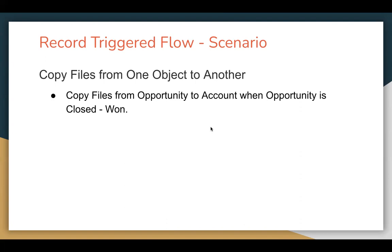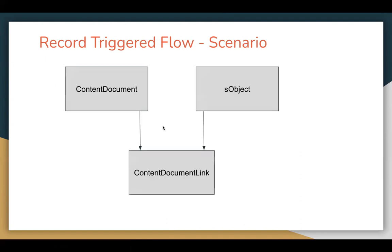First, we need to understand how files are managed in Salesforce. Basically, whenever you attach any file on any object, a ContentDocument object record is created for that file. So the file always stores under the ContentDocument object. Then the S-object — let's say Opportunity — if you are uploading any file on Opportunity, a file record will be created under ContentDocument object, and the ContentDocument and that Opportunity object will be linked via a ContentDocumentLink junction record. This ContentDocumentLink is a junction object which is related to ContentDocument as well as the S-object.